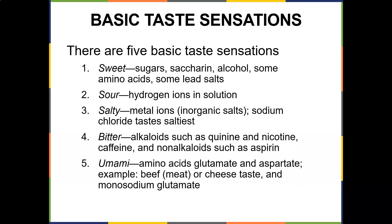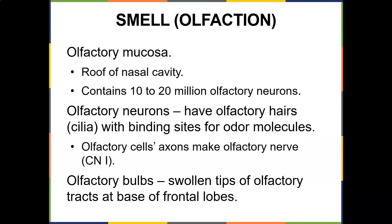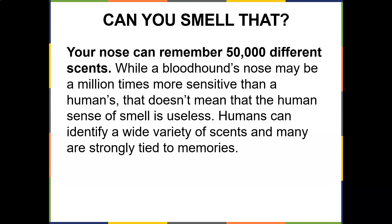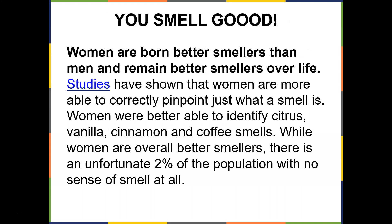Now smell — remember, taste and smell go hand in hand because 40% of taste is smell. The olfactory mucosa is located at the roof of the nasal cavity and contains about 10 to 20 million olfactory neurons. Olfactory neurons have olfactory hairs — cilia — with binding sites for odor molecules. Olfactory cell axons make up the olfactory nerve, and the olfactory bulbs are the swollen tips of olfactory tracts at the base of the frontal lobes. You can remember 50,000 different scents. Women are born better smellers than men and remain better smellers over life; they are better able to identify citrus, vanilla, cinnamon, and coffee smells.